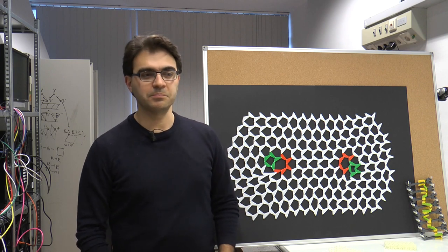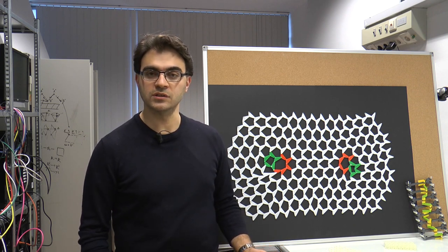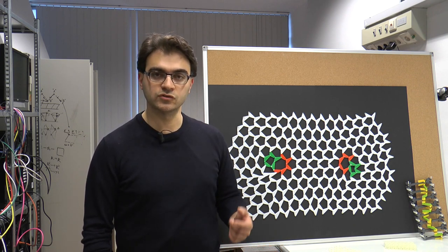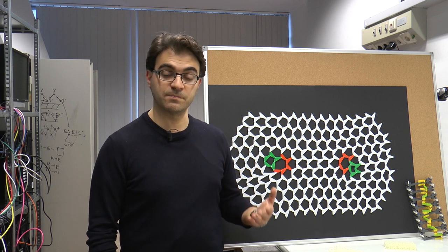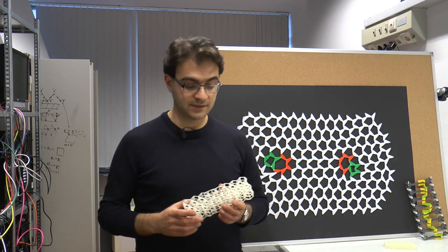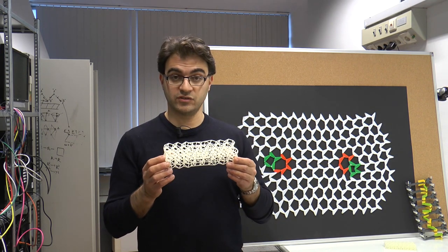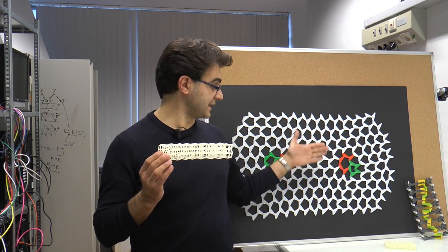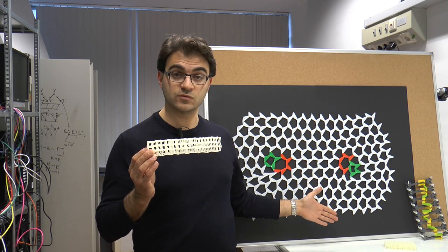States of self-stress are passive players when it comes to motion, but they are still very useful to control how a material responds to compression, in particular how materials fail. We demonstrated that by studying this three-dimensional structure, which is obtained by stacking Kagome lattices like this one, which have an additional property.